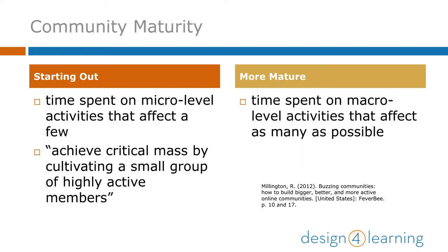Let's transition from creation to establishment. Millington contrasts community management at the earlier stages with the later stages as more focused on direct interaction with a smaller number of members. Remember the 1-9-90 rule? You can think of what Millington describes here as an attempt to connect with the 1% of super users and maybe even the other 9% of contributors, without worrying as much about the other 90% quite yet. With carefully crafted activities early on, that 10% should start to emerge, and then you need to nurture relationships with them to keep them active. Their behavior will serve as a model for others to follow.